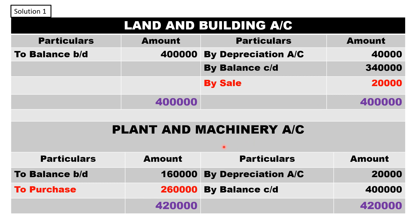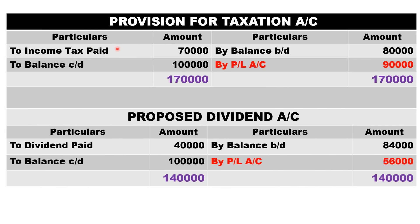For the plant and machinery account: balance brought down is twenty-one lakh sixty thousand. Record the depreciation from the adjustment and then the closing balance. Credit side is more, so the difference of two lakh sixty thousand on the debit side is treated as purchase of plant and machinery, which comes under investing activity.